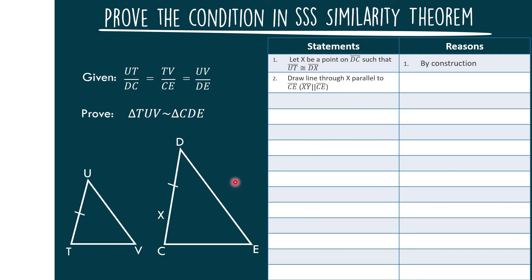Number 2: Let us draw a point on BC, then draw a line through X that is parallel to CD. We will draw line XY such that XY is parallel to CD.